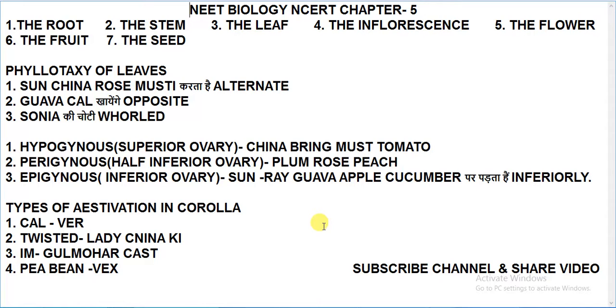The mnemonic is: Sun, China, Rose, Mustard. This means that the alternate type examples are sunflower, china rose, and mustard.